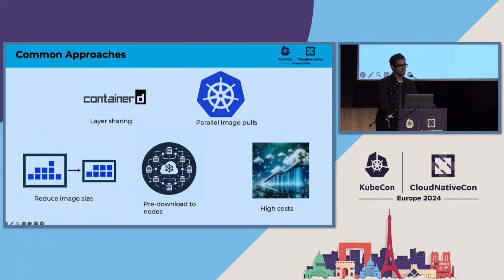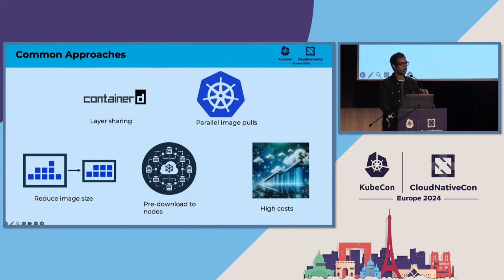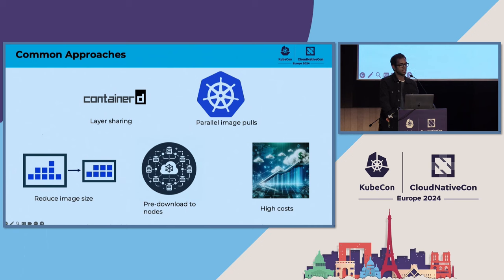What are the common approaches to address this problem? Most container runtimes like ContainerD already have a feature called layer sharing. A container image is made up of many layers, and these layers need to be pulled and decompressed. If the layers are already present on the host node, container runtimes like ContainerD don't need to pull them again. There's also a flag in Kubernetes called serialize image pull — if you set that to false, you can parallelize the pulls on your node, which is especially useful when multiple pods are scheduled on the same node and need to make progress simultaneously.